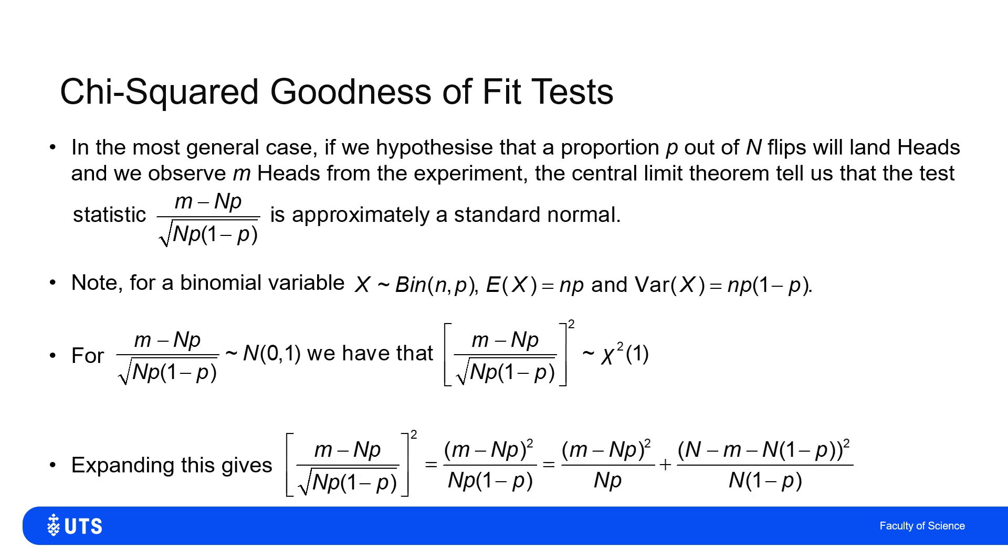So I just expand that, square the numerator and the denominator. Then we can easily see that what we get is (m - np)² divided by np(1-p).